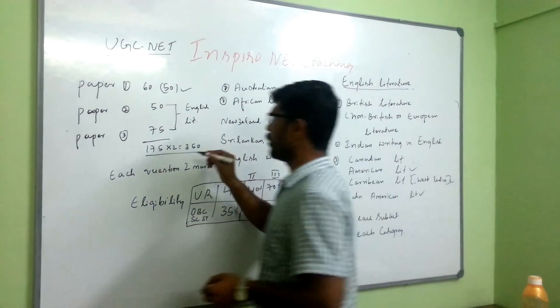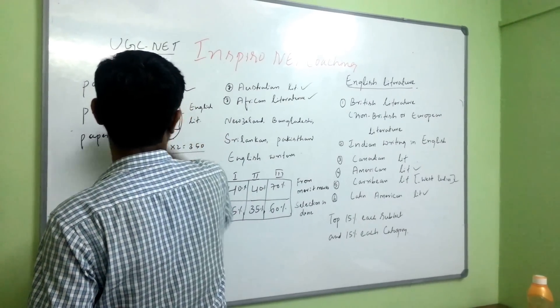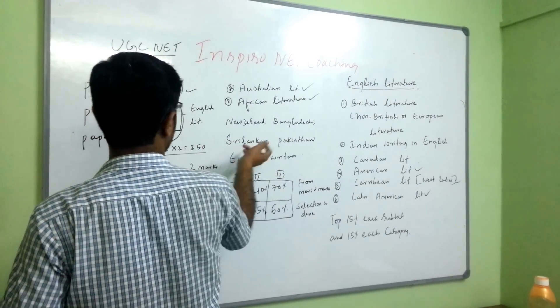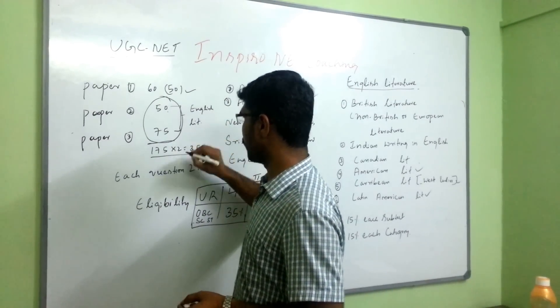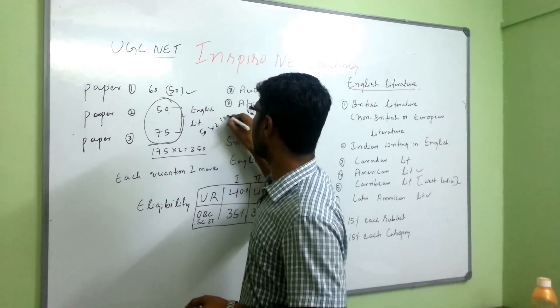For that reason we need to keep more focus on paper second and paper third from the literature point of view. So we have 50 questions, 50 questions means into 200 marks.